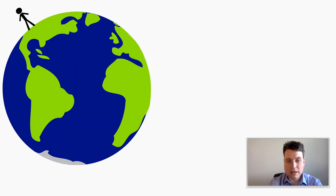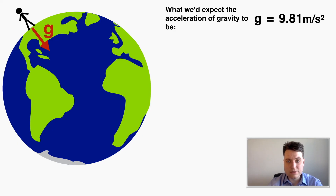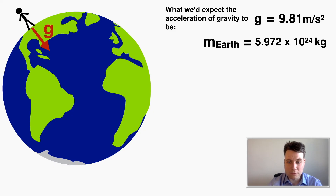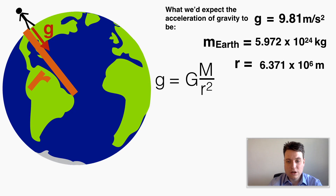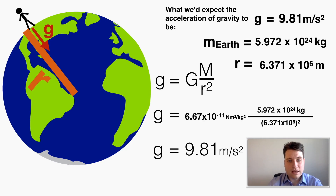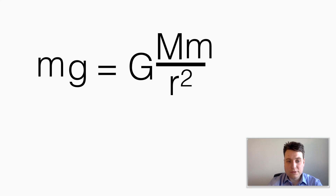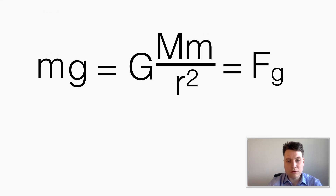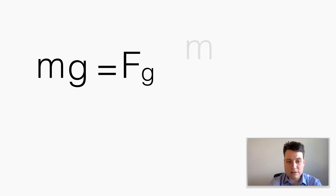We can verify that lowercase g makes sense by calculating the acceleration of gravity for a person at earth's surface, which we'd expect to be 9.81 m/s². Using earth's mass of 5.972 times 10 to the 24 kg and radius 6.371 times 10 to the 6 meters in our acceleration equation gives exactly 9.81 m/s² — this equation explains where that value comes from. Also note that multiplying the acceleration of gravity by mass gives the force of gravity equation, consistent with our earlier units where force of gravity equals mass times g.